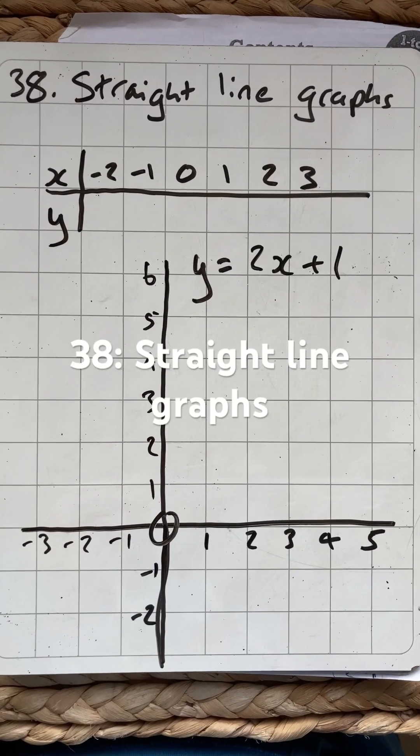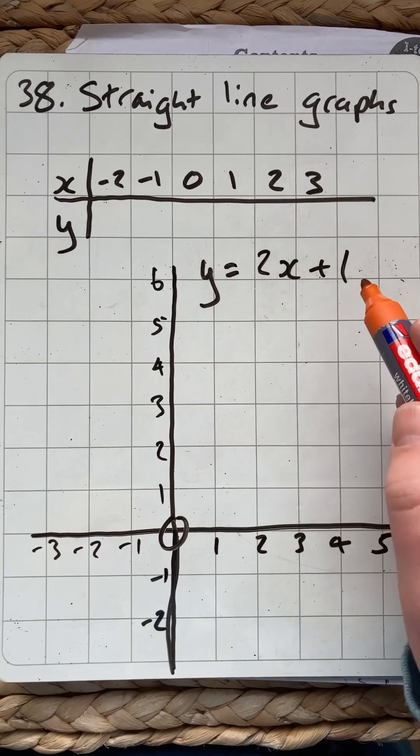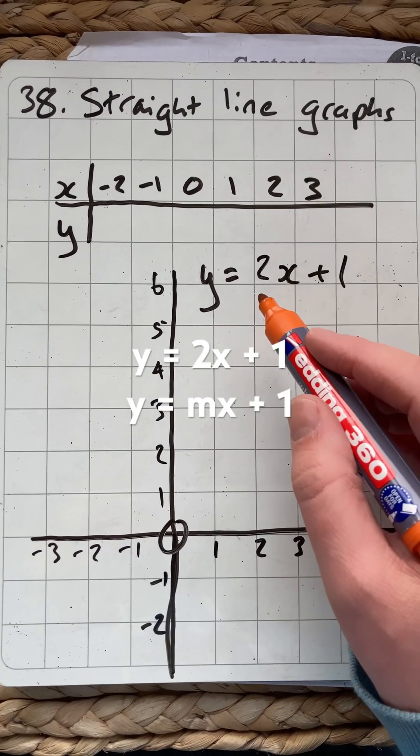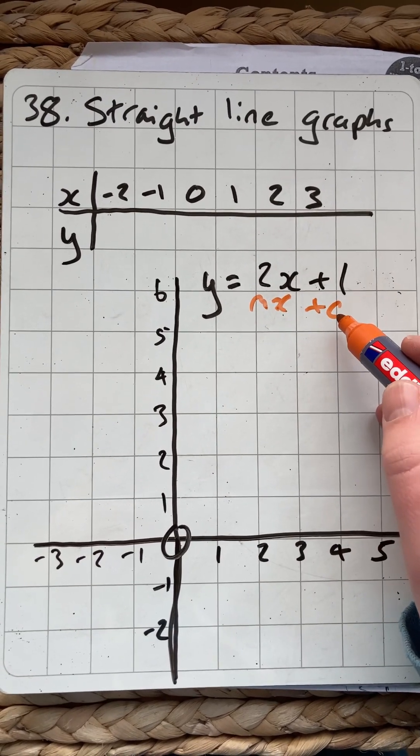Hello and welcome to Martin Math doing topic 38, straight line graphs. So we have this equation, y equals 2x plus 1, equation for a straight line in the form y equals mx plus c. M is the gradient, c is the intercept.